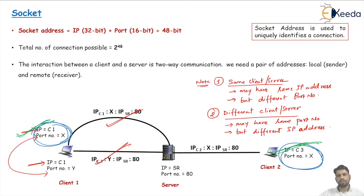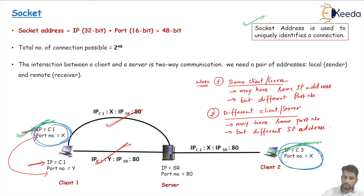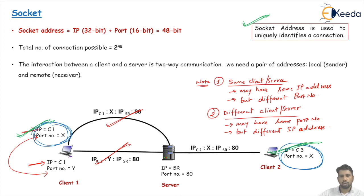That's why we can distinguish each connection uniquely by the combination of IP address and port number — called the socket address. The socket address uniquely identifies a connection. This is all about the socket address.